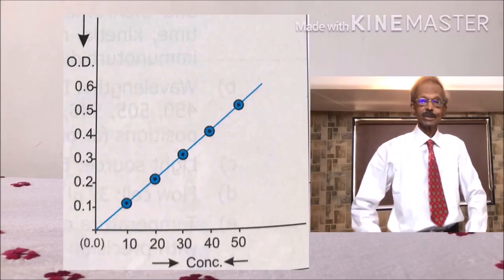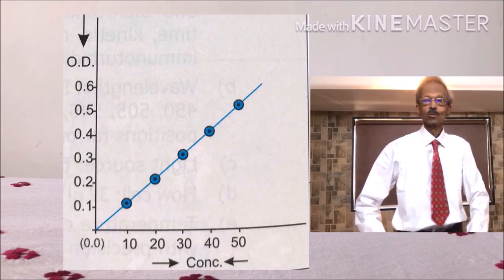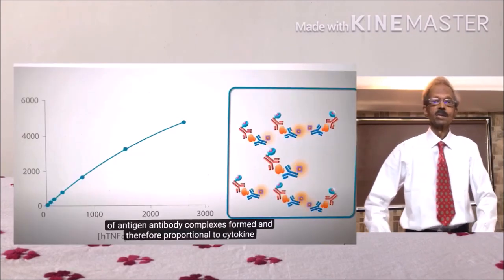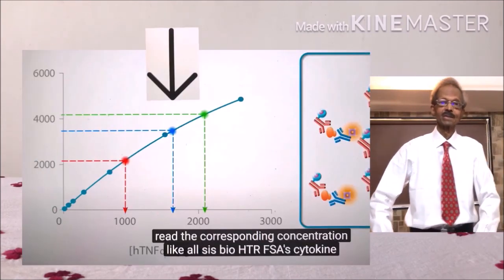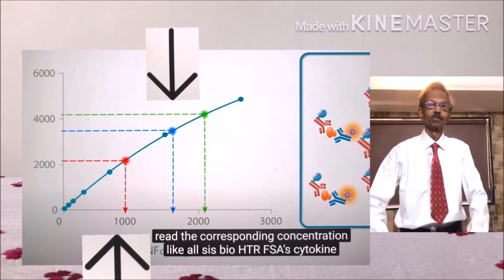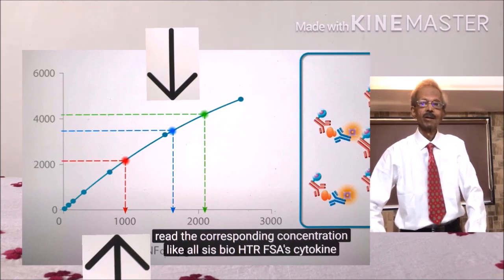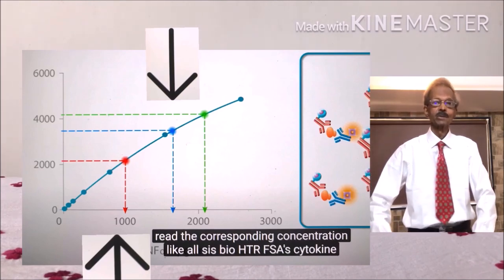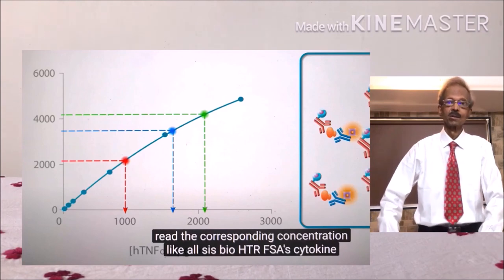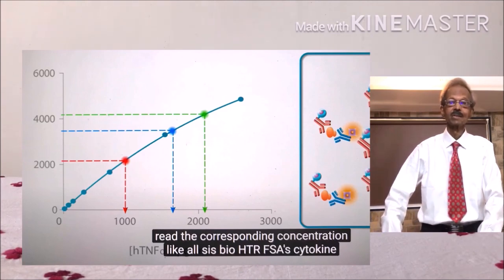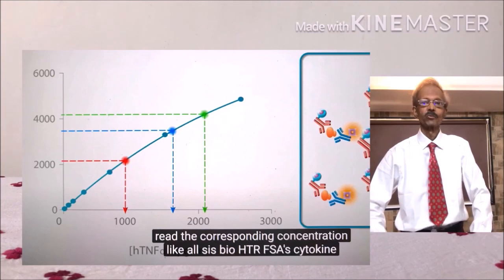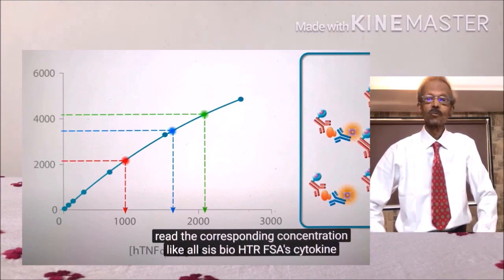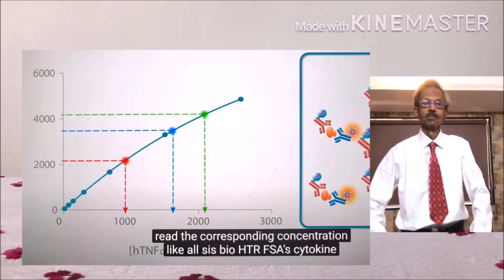The spectrophotometer first prepares a standard graph of the standard, and then the test reading is measured on the standard graph, and that's how serum interferon gamma concentration can be determined. Just see the graph on the left hand side and you will realize how the concentration of gamma interferon is calculated.